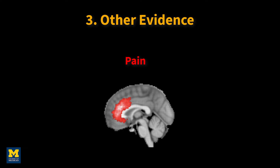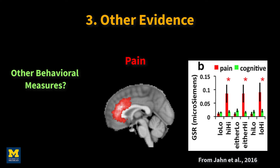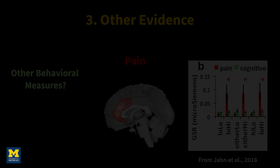Lastly, gather any other data to constrain your inference. For example, if someone is making a claim that their effect in the cingulate cortex represents pain, see whether there are additional behavioral measures to support that conclusion. A relatively high galvanic skin response, for instance, would make it more likely that they are indeed finding a neural signature of pain rather than something like time perception.